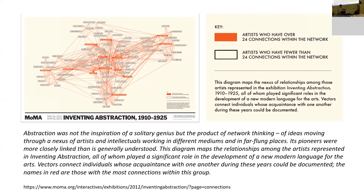The catalogue text continues: ideas moved through a nexus of artists and intellectuals working in different mediums and in far-flung places. Its pioneers were more closely linked than is generally understood. The diagram maps the relationships among the artists represented in "Inventing Abstraction," all of whom played a significant role in the development of a new modern language for art. Vectors connect individuals whose acquaintance with one another during these years could be documented. Names in red are those with the most connections — specifically, those with more than 24 connections are marked in red, making them the hubs.